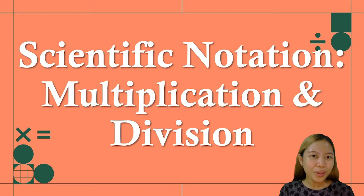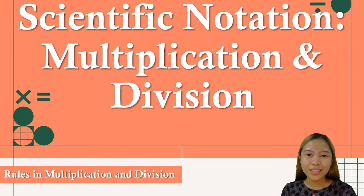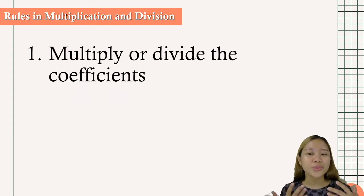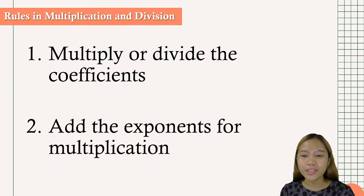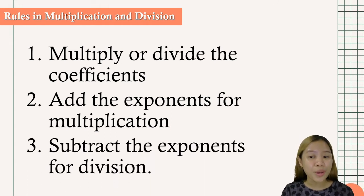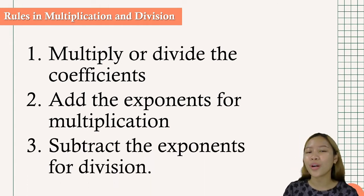So to start with, let us know first the rules. What are the rules in multiplication and division? Number one is to multiply or divide the coefficients. Next, just simply add the exponents for multiplication and then subtract the exponents for division.